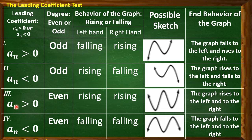Third case: the leading coefficient is greater than zero and the degree is an even number. The behavior of the graph is rising to the left and rising to the right. At the ends of the graph there is always an arrowhead, since the graph of a polynomial function is always a smooth, continuous curve.